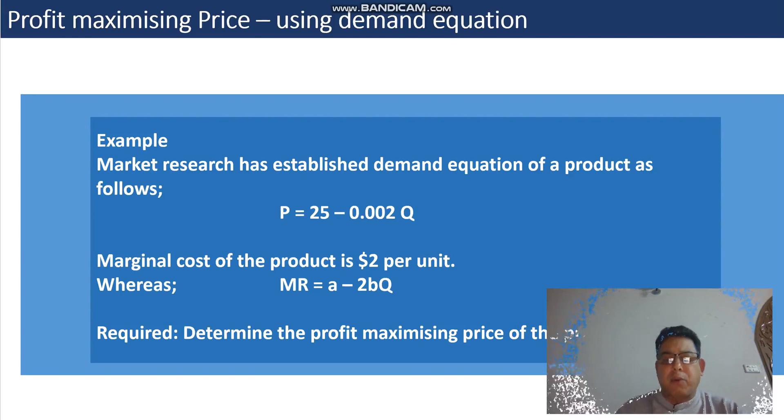If we are given the complete demand equation of a product, how can we use it to determine the optimum price and quantity? The marginal cost of the product is $2 per unit, which some people call variable cost or direct cost, whereas the MR function equals MR = a - 2bQ.